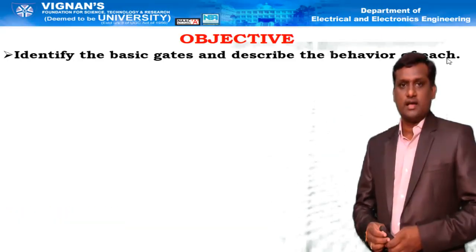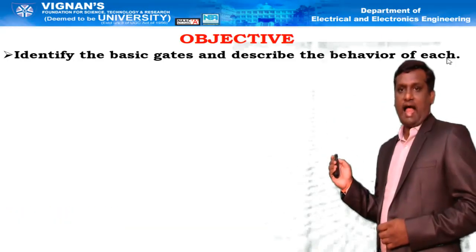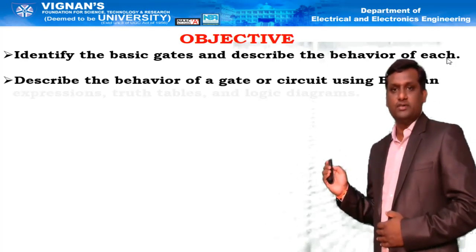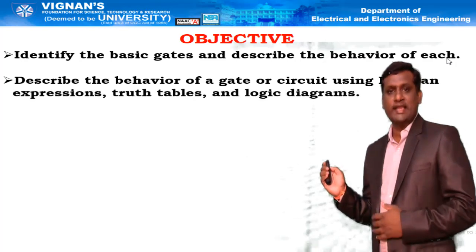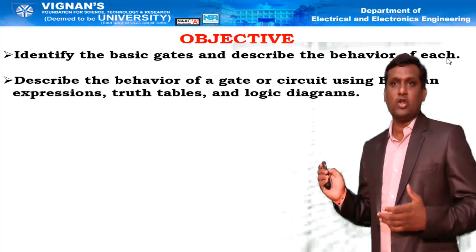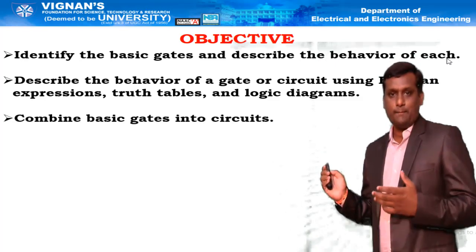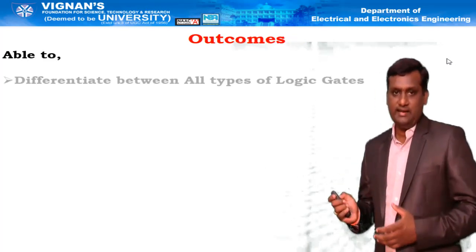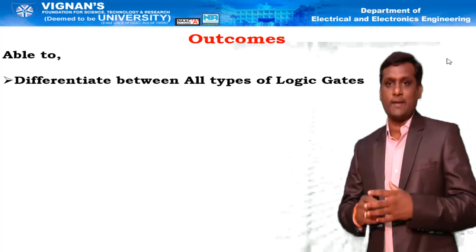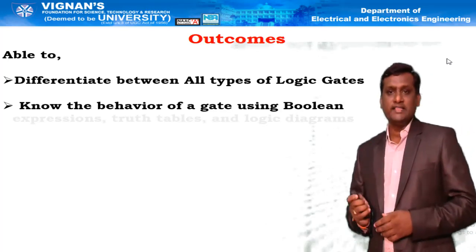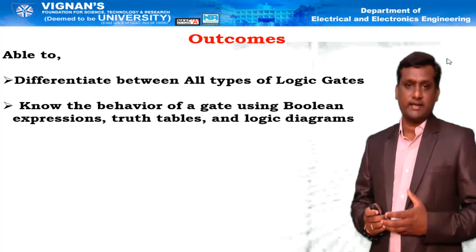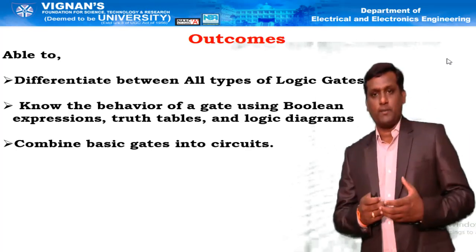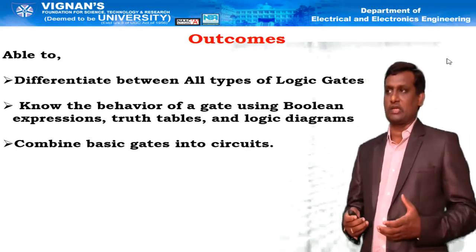The objectives of today's lecture are: first, identify basic gates and describe the behavior of each; second, describe the behavior of a gate or circuit using Boolean expressions, truth tables, and logic diagrams; and third, combine basic gates into circuits. Upon completion of today's lecture, we will be able to learn the difference between all types of logic gates, know the behavior of the gate using Boolean expressions, truth tables and logic diagrams, and solve problems related to combining basic circuit gates.